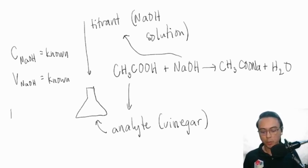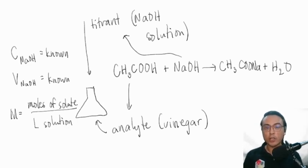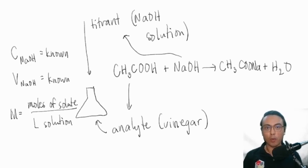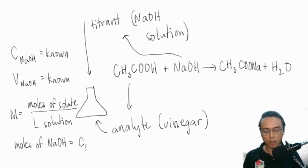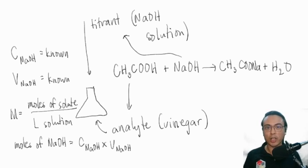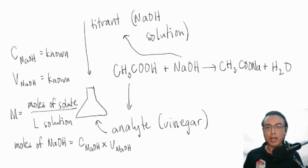If we know the concentration of sodium hydroxide and the volume used in neutralizing our analyte, we can use those two values to determine the number of moles of sodium hydroxide used in the reaction. Molarity is defined as moles of solute over the volume of solution in liters. So if you are given the concentration of your titrant in molar, we can determine moles of sodium hydroxide by cross-multiplying: moles of NaOH = concentration (M) × volume of NaOH solution used.